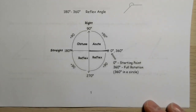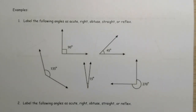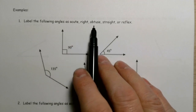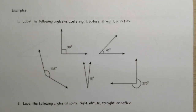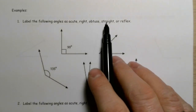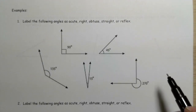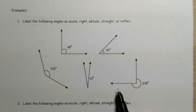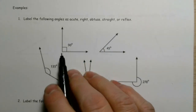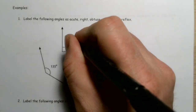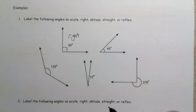Let's take a look at some examples. We're going to label the following angles as acute, right, obtuse, straight, or reflex. As soon as you look at this first one and see 90 degrees, I know that this is a right angle — 90 degrees, definitely right angle.